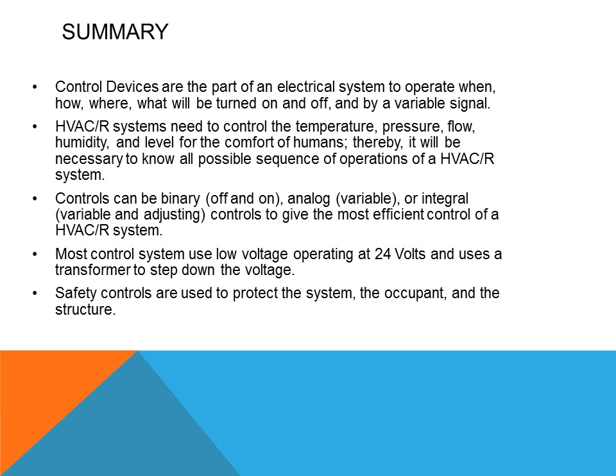Controls can be binary, which is on and off; analog, which is variable; or integral, which is variable and self-adjusting, to give the most efficient control of HVAC systems. Most control systems use low voltage operating at 24 volts, even though commercial systems can have higher control voltage, but will still use transformers to step down the voltage. Safety controls are used to protect the system, the occupants, and the structure.